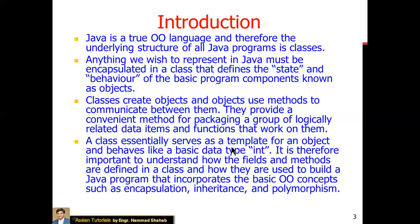A class essentially serves as a template for an object and behaves like a basic data type. This means we use a user-defined data type in classes. When you use a class name as a data type, we will use that data type to create objects. It is important to understand how fields and methods are defined in a class and how they are used to build a Java program that incorporates basic OOP concepts such as encapsulation, inheritance, and polymorphism.